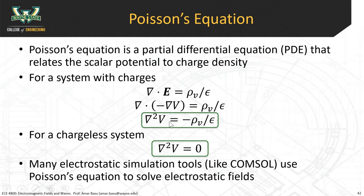We know that the electric field is equal to the negative gradient of the voltage. If you do the math, you get that del squared of V equals negative rho_v over epsilon. Del squared V is called the Laplacian of the electrostatic potential. V is the electrostatic potential, and this equals the charge density rho divided by epsilon. In the special case where you don't have any charges at all, del squared V equals zero.